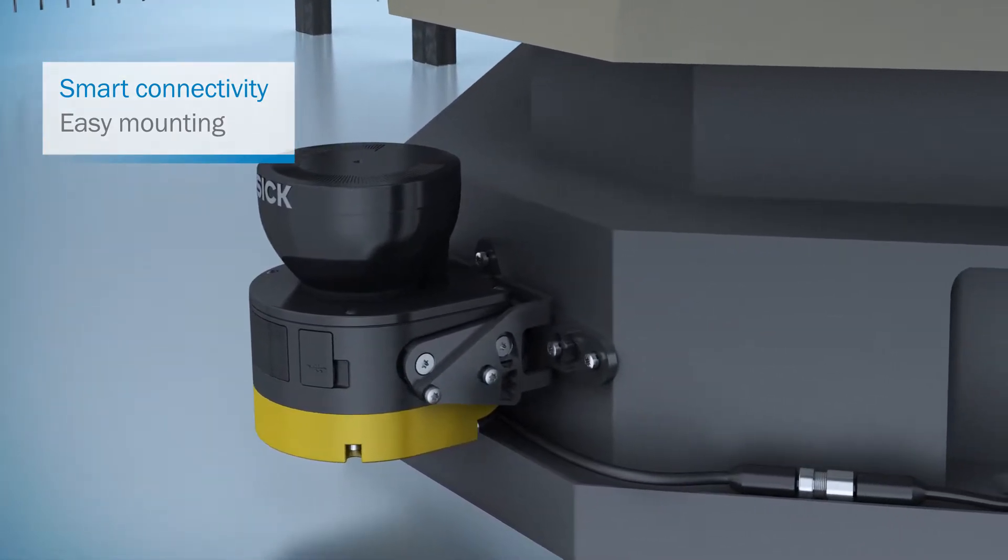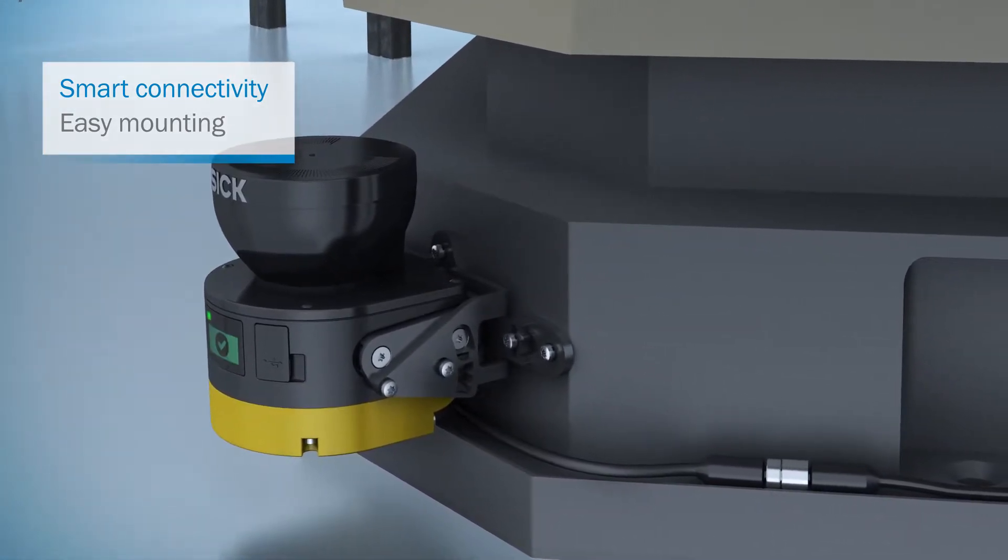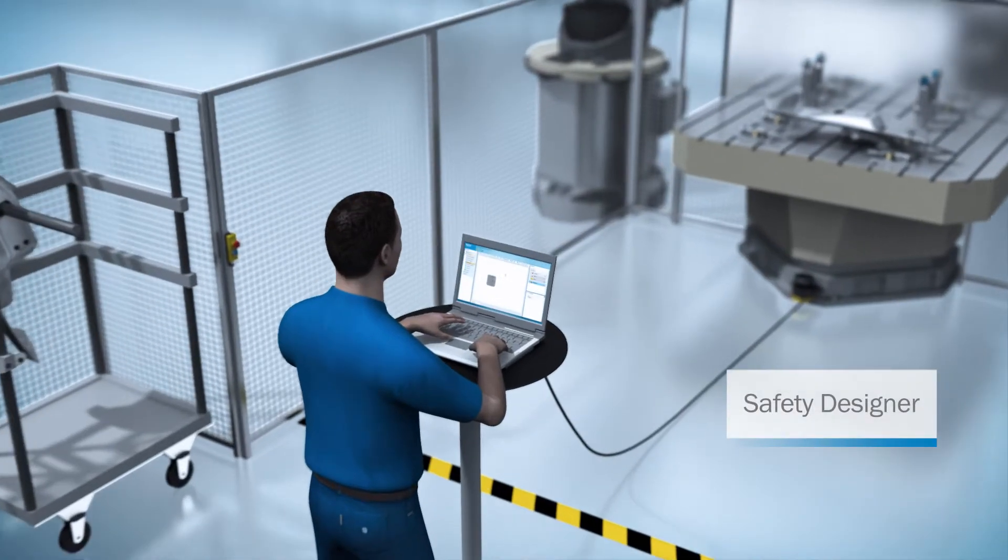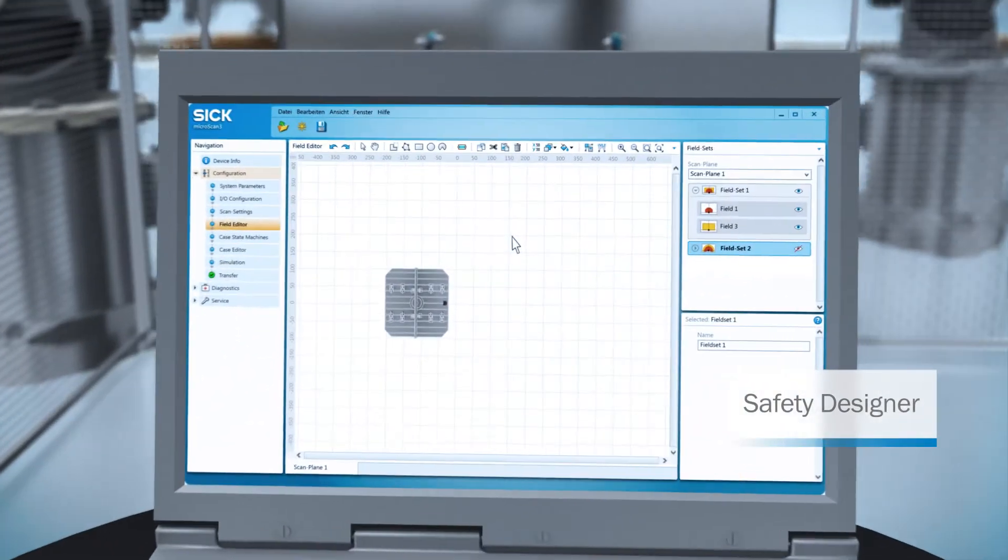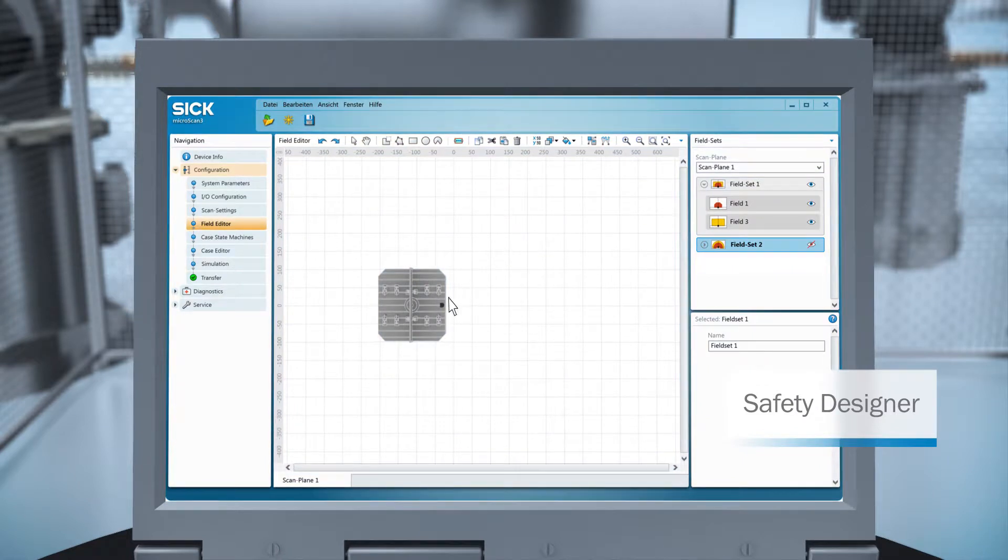M12 standard connectors allow scanners to be connected quickly. Adjusting protective fields has never been easier. Using a tool in the Safety Designer software, you draw the area you want the MicroScan3 to monitor in your machine layout.